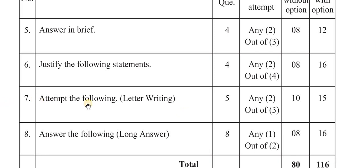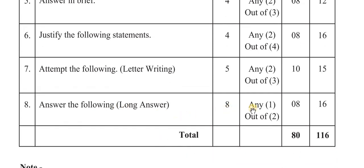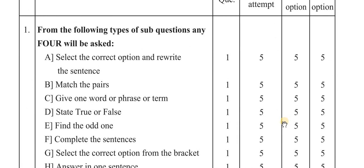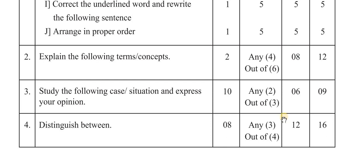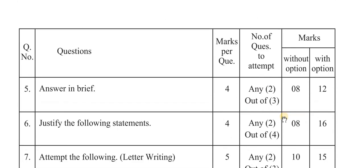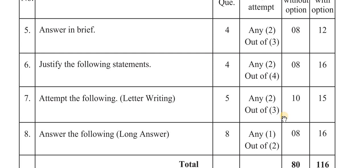Question number seven is 'attempt the following,' which is letter writing, five marks each, any two — without option is 10 marks, with option is 15 marks. Question number eight is for long answers, eight marks per answer, any one — without option is 8 marks, with option is 16 marks. In totality, the paper is 80 marks without options and 116 marks with options.